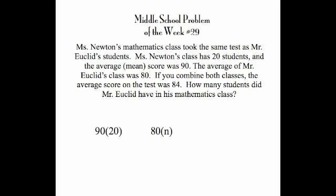We're going to call that n because we don't know that number yet. If you've had algebra, you'd know you could add the total for the first class plus the total for the second class, divided by the total number of students in the two combined, and get 84. Solve this simple equation shown here and you've got the answer to this week's problem.